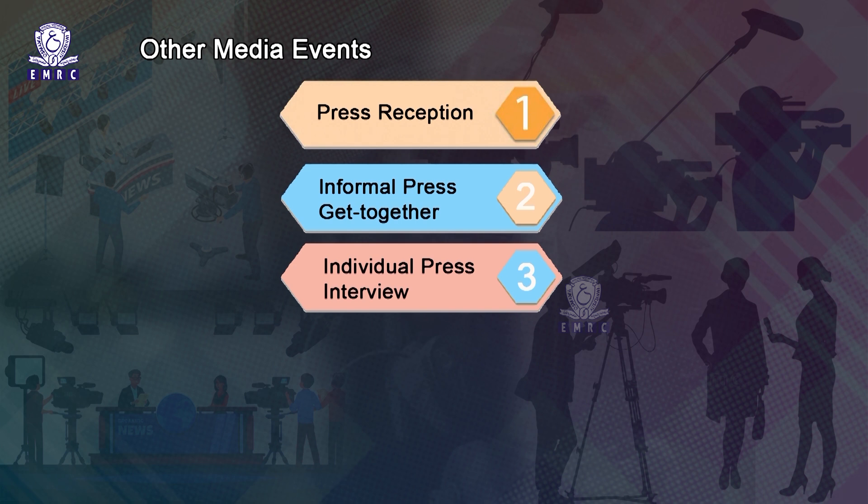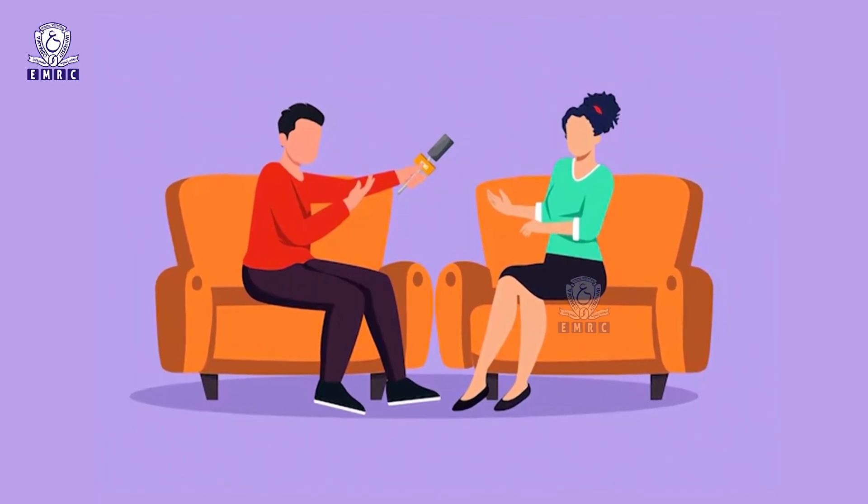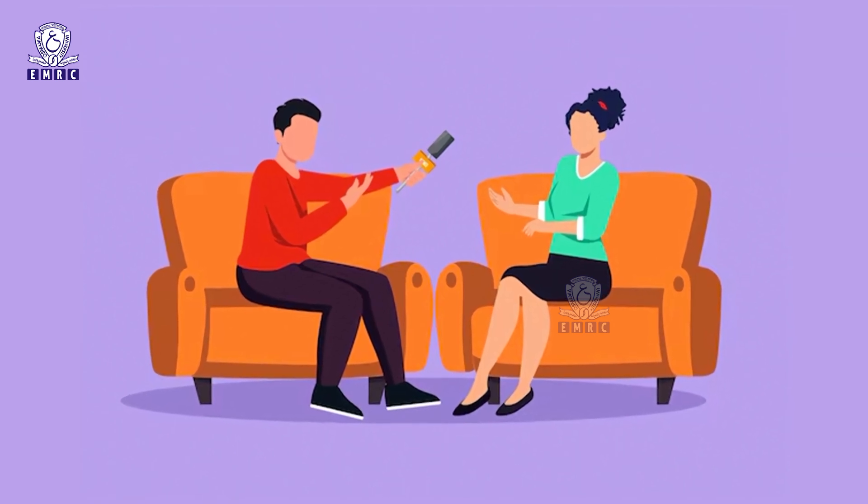Individual press interview is another step in improving press relations — either with the chief of bureau or a principal correspondent of a newspaper, news agency, radio or TV channel. It is an exclusive interview of a chief executive with a newspaper correspondent and depends on the familiarity of the PR manager with media persons. As a result of such an interview on selected issues, good coverage can be expected, besides creating and maintaining a direct rapport between the management and the reporter.